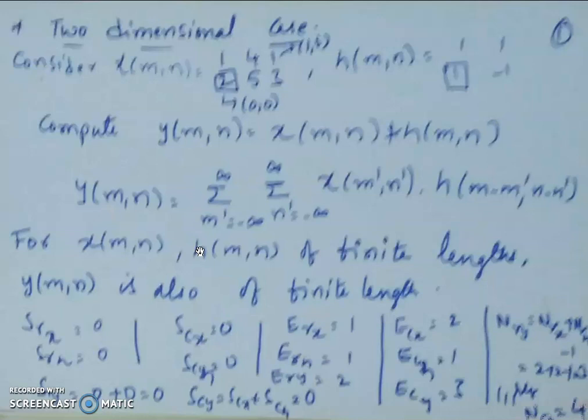Now, in the previous class we have derived the relation between the input and the output for an LSI two-dimensional system. We have seen that the relation between the input and output is y(m,n) equal to x(m,n) convolved with h(m,n), where h(m,n) is the impulse response of the given LSI two-dimensional system.